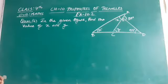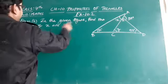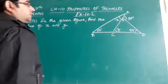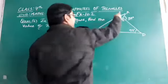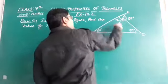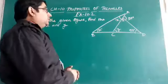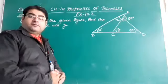We have a question. In the given figure, find the value of x and y. We are given two triangles which are adjacent to each other. That is triangle ABC and triangle ECD. We have to calculate the value of x and y.